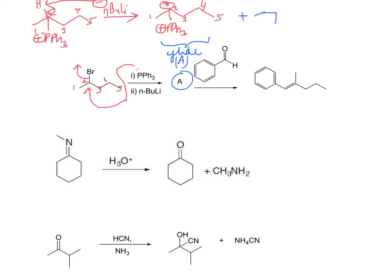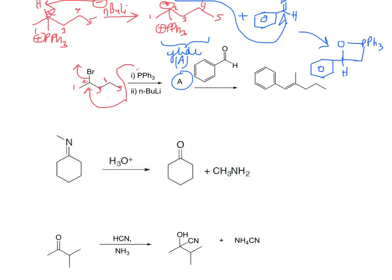We then treat the ylide with the carbonyl compound — in this case benzaldehyde. The negative goes to the electrophilic carbon and the positive goes to the oxygen, giving you the betaine. The phosphorus-oxygen bonds strengthen and you end up with the desired alkene. You should know the Wittig reaction mechanism — it's fair game as a prepared question or box problem.